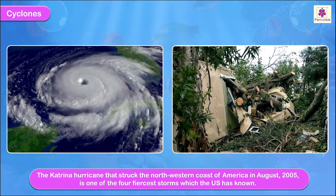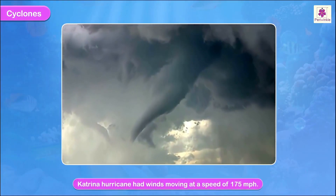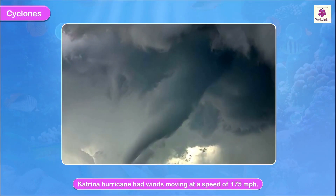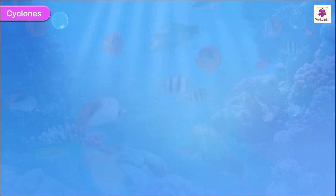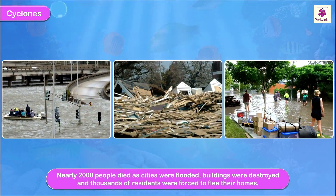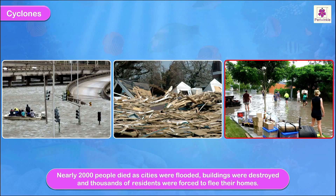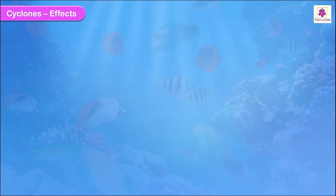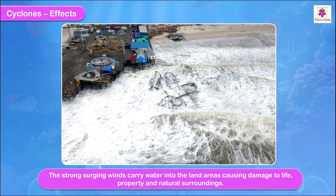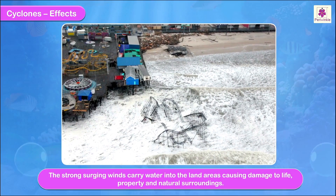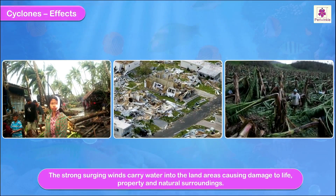The Katrina hurricane that struck the northwestern coast of America in August 2005 is one of the four fiercest storms the U.S. has known. It had winds moving at a speed of 175 miles per hour. Nearly 2,000 people died as cities were flooded, buildings were destroyed, and thousands of residents were forced to flee their homes. Effects of cyclones: The strong surging winds carry water into land areas, causing damage to life, property, and natural surroundings.